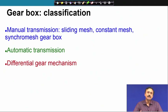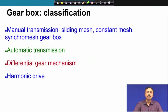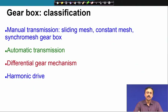We also have a differential gear mechanism, used in four-wheelers such as cars, trucks, and buses. When we take a turn, the inner wheel has to rotate at a lower speed than the outer wheel, but at the same time torque has to be transmitted to both wheels. For this we use a differential gear mechanism. Other than that, we also have harmonic drives, which use flexible gears and are used for very high speed reduction and can magnify torques to a huge extent. However, we are not going to discuss the differential gear mechanism or the harmonic drive in this lecture.